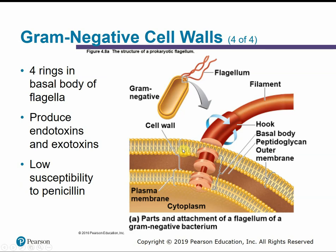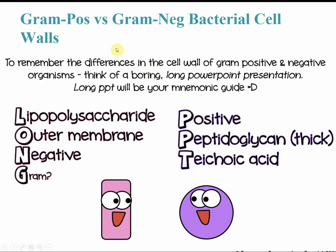Gram-negative cells, having two membranes, need two pairs of rings in their flagella. They produce exotoxins as well as endotoxins — the lipid A and lipopolysaccharide in the outer membrane — and they have low susceptibility to penicillin because they have that extra protective layer with the outer membrane. One way to help remember the differences: think of a boring long PowerPoint presentation. Use 'Long PowerPoint' as your mnemonic guide.